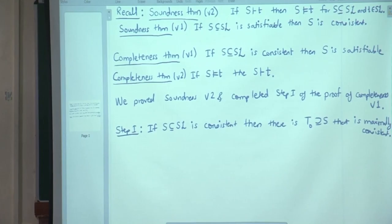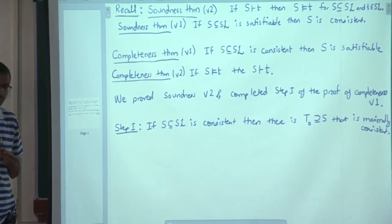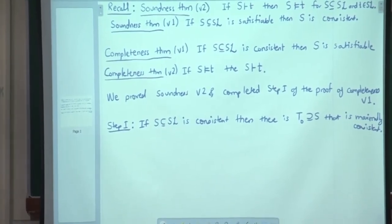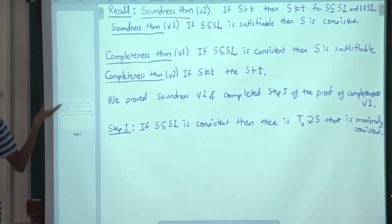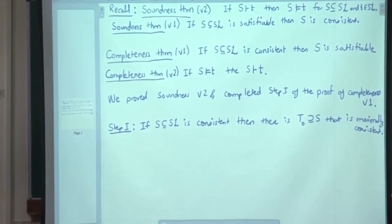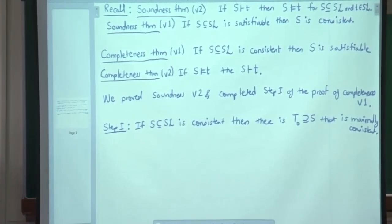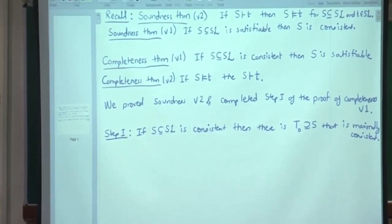The completeness theorem is the harder part of this duo and it is the converse. Completeness theorem version 1 is what we are proving right now. We are saying that if S is consistent, then S is satisfiable. There is, of course, a version 2, and that will be a tutorial problem to show that these versions are equivalent. So if T is a logical consequence, then T has a proof from S — there is a formal proof.